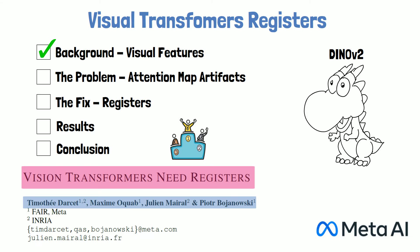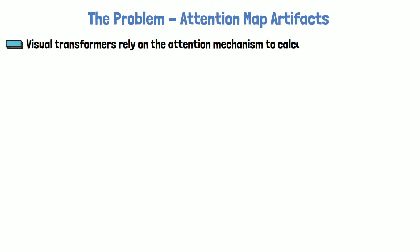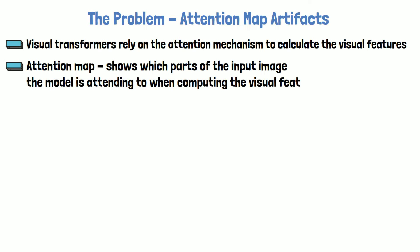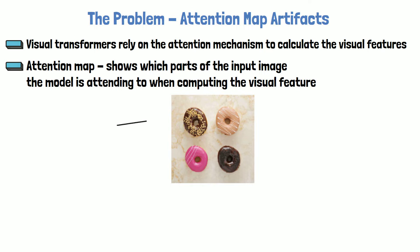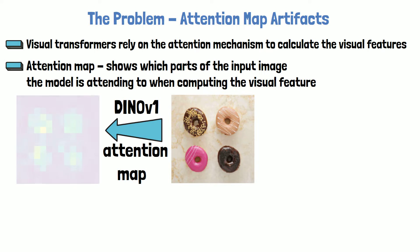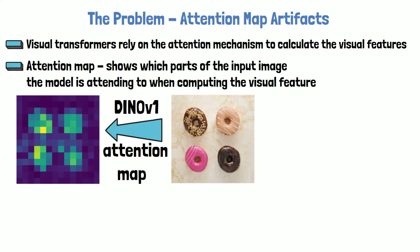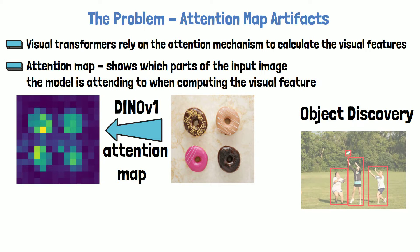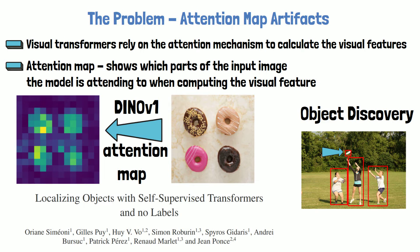Now we're ready to describe the problem the researchers found. To calculate visual features, the visual transformer uses the attention mechanism. The attention map is a visualization of attention values showing which parts of the input image the model is attending to when computing features, giving an intuition for which parts are important. For example, for an image of four donuts, the attention map from DINOv1 shows bright colors at the donuts' location and dark colors for the background. One usage is object discovery, where given an input image we locate objects — including unknown, unlabeled objects such as a frisbee. This method using DINOv1 for object discovery is called LOST, introduced in a 2021 paper.